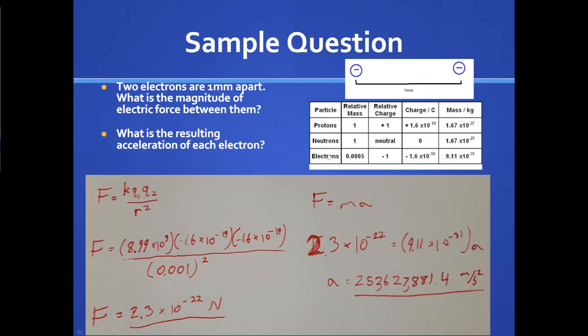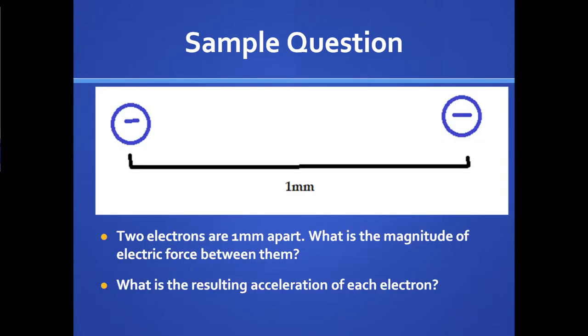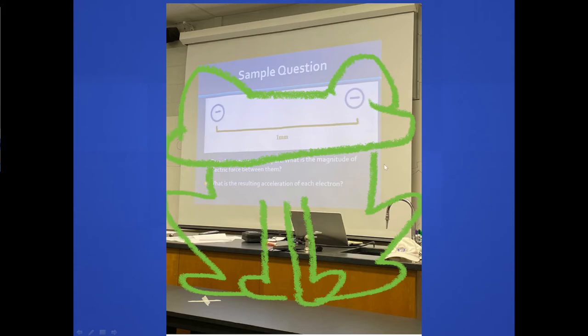One thing to note: the radius term is on the bottom of the formula, so the closer together two things are, the more force there will be; the farther apart, the much weaker it gets. Also, the last time this example was done in class, someone noticed the picture kind of resembled the eyes and mouth of a frog, so it's been kept in the notes.